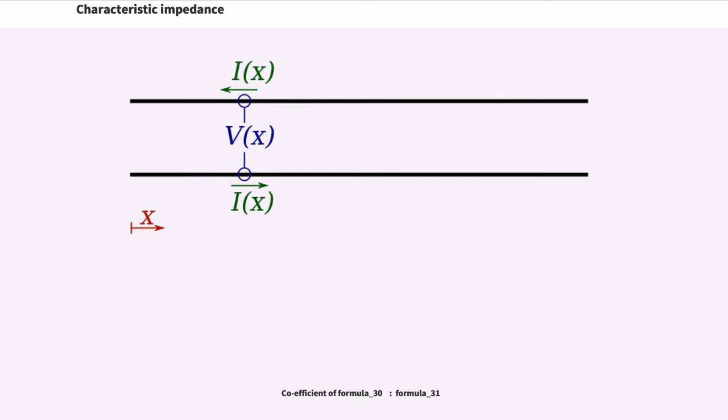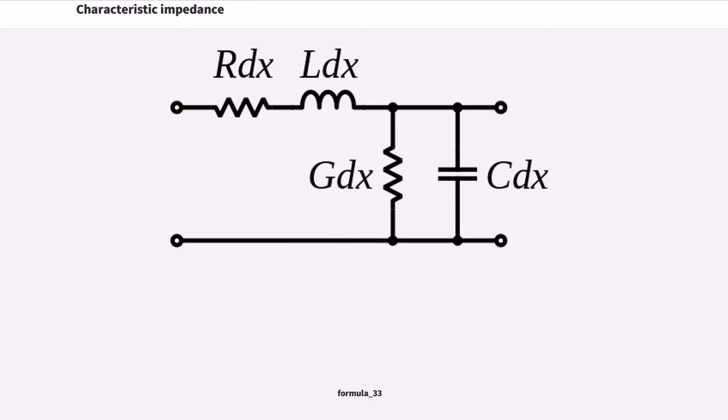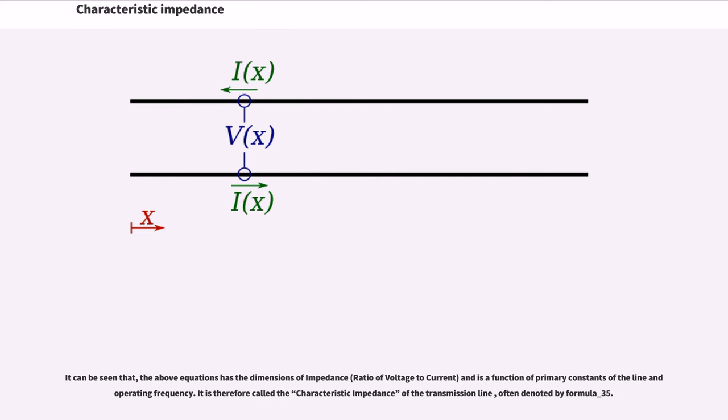Coefficient of Formula 28 gives Formula 29, and coefficient of Formula 30 gives Formula 31. Since Formula 32, Formula 33, and Formula 34 hold, it can be seen that the above equation has the dimensions of impedance and is a function of primary constants of the line and operating frequency. It is therefore called the characteristic impedance of the transmission line, often denoted by Formula 35.